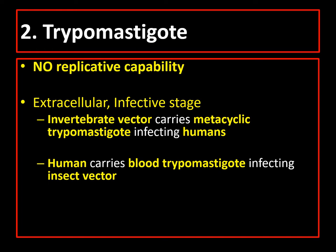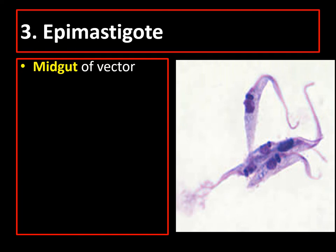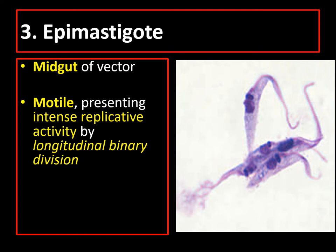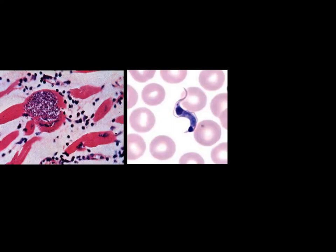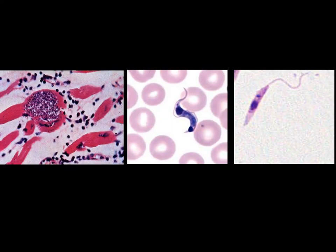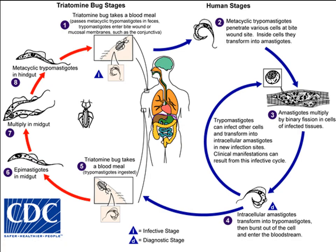The last form to discuss is epimastigote, which is present in the mid-gut of the vector. It is motile with intense replicative activity by longitudinal binary fission. The three forms of Trypanosoma cruzi are amastigote, trypomastigote, and epimastigote.